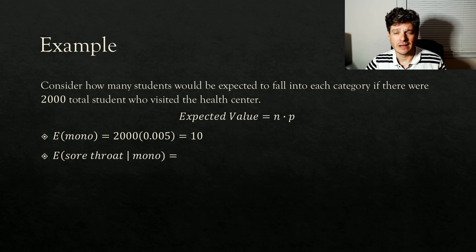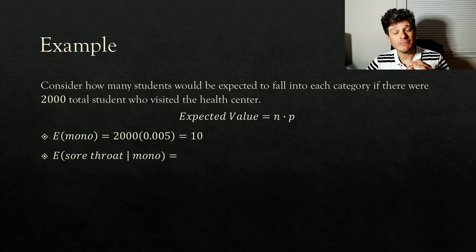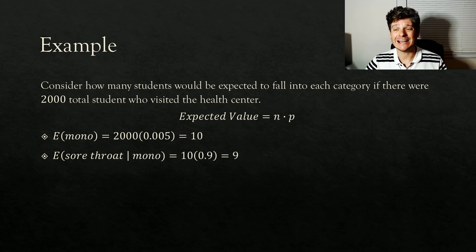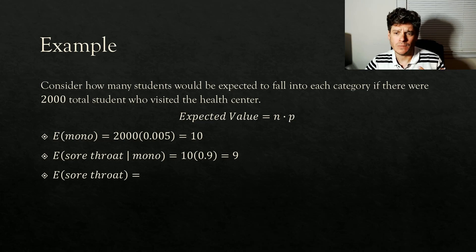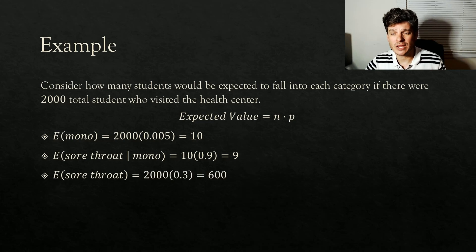What's the probability that a student has a sore throat given they have mono? Here we change our sample size, because we're only looking at those 10 students we already know have mono. Out of those 10 students, the probability is 90%, so 9 out of 10 students are going to have a sore throat when they have mono. Then for sore throats overall, we're back to 2,000 students — there's no condition on this probability. 30% of 2,000 is 600 total students with a sore throat.